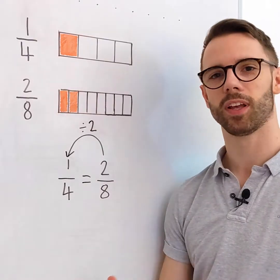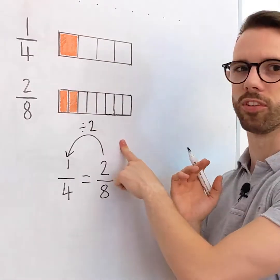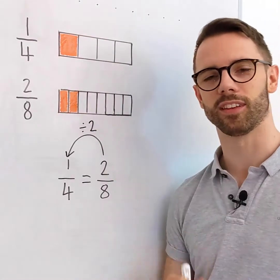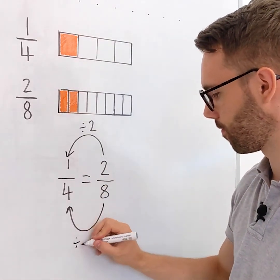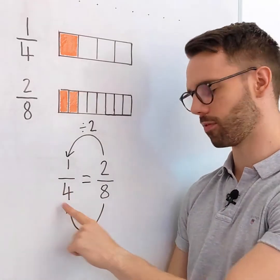I can divide it by two and of course, whatever I do to the numerator, I do to the denominator to keep it proportional. Eight divided by two is four.